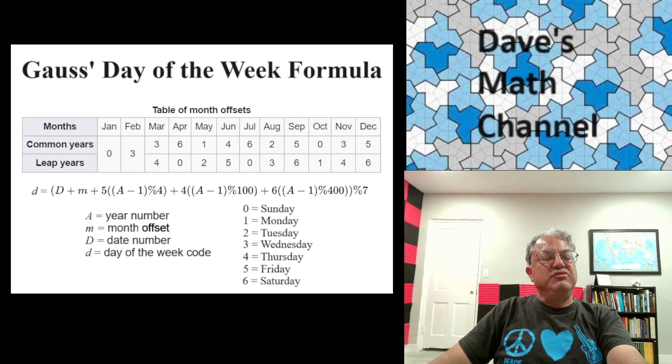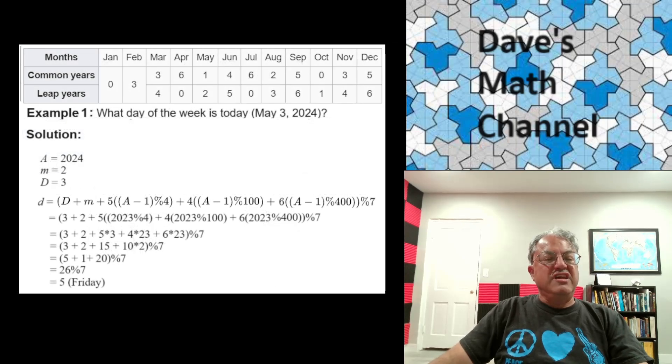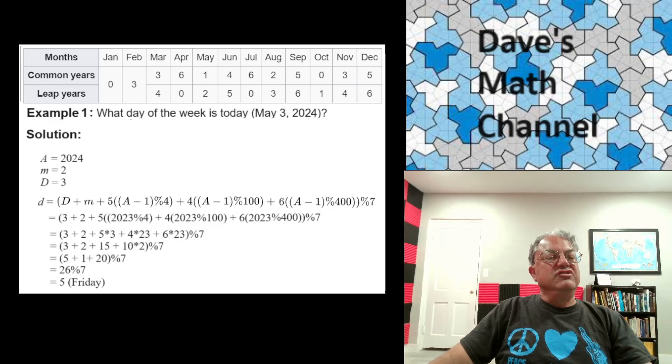So let's just do a couple of examples. Suppose we want to know what day of the week it is today. I mean, you guys should know it's Friday, but suppose you didn't know that. Suppose today wasn't today. Suppose today was a hundred years ago and we wanted to know what day it was on May 3rd, 2024, what day of the week that was. So we could do it using Gauss's formula. Let's just go through it. A, that's the year number, that's 2024. Little m, that's the month offset for May. Since 2024 is a leap year, it's going to be two. So little m is two. Capital D, that's the date on the calendar and it's the third, so capital D is three. So now we just plug in all the numbers and here's the formula.